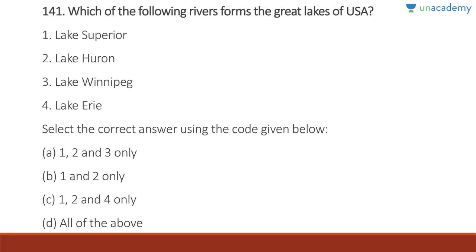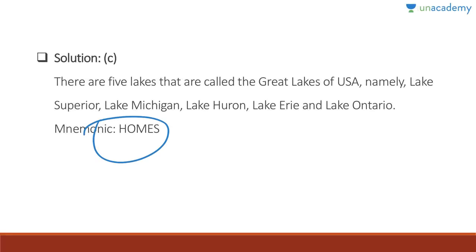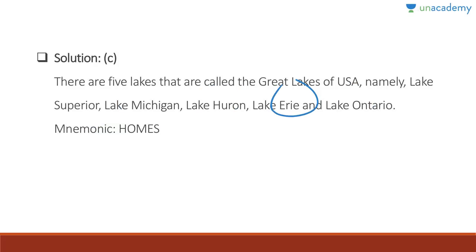Question 141: Which rivers form the Great Lakes of the USA? Remember the mnemonic HOMES: H for Huron, O for Ontario, M for Michigan, E for Erie, S for Superior. Answer is C, 1, 2, and 4 — Winnipeg is not included. These lakes are located along the Canada-USA border.